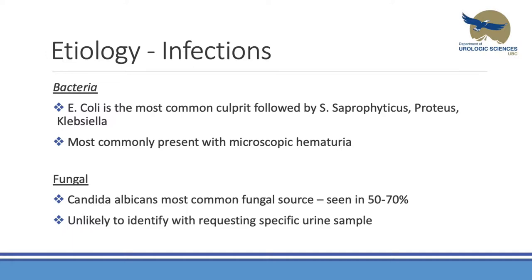Bacterial and fungal infections rarely cause a true long-term hemorrhagic cystitis presentation. Most present with microscopic hematuria, but it's still important to know that infection is always on our differential. E. coli is the most prevalent bacterial cause. For fungal infections, these patients often present with UTIs where cultures are negative — a specific urine sample must be sent to look for fungal growth, with Candida being the most common fungi.